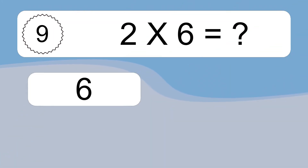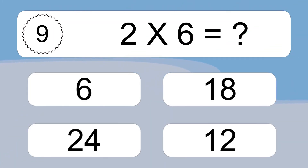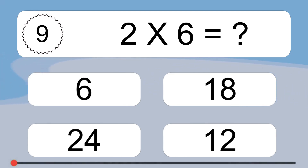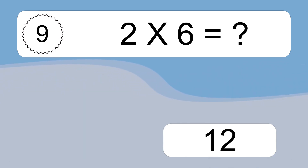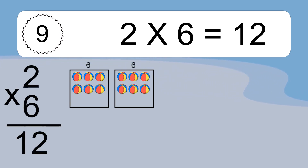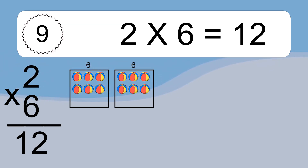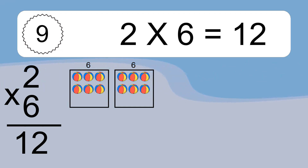2 times 6 equals what? 2 times 6 equals 12. We have 2 boxes, and each box has 6 colorful balls inside. If you count all the balls in all the boxes together, you will have 2 times 6 balls. This equals 12 balls.